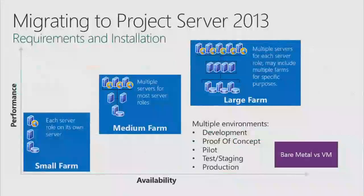When setting up your new farm, take capacity planning into account. A small farm uses the three-tier architecture — suitable for development, proof of concept, or lightly used environments — and is the minimum recommended configuration using three boxes. You can run everything on one box but that's not recommended for production, and it's not a supported scenario. For a small production farm, if any one of those boxes goes down, your entire farm is down.